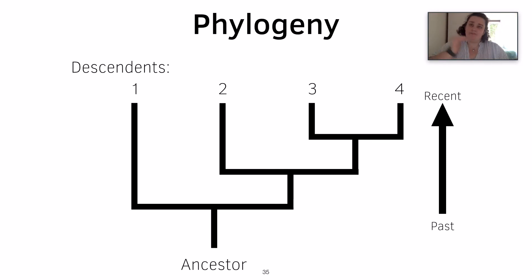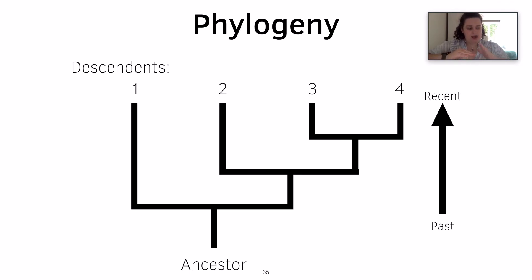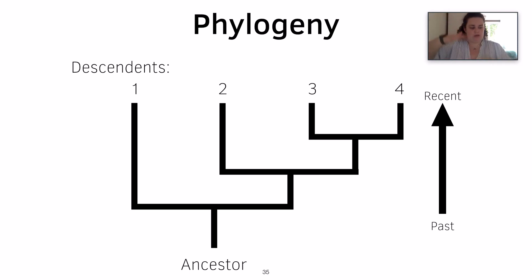Phylogeny is often represented as a tree. At the base of the tree — the roots — you get your most ancestral lineage, and then as you move forward and up you get their descendants. As you move up the tree you are moving further forward in time.